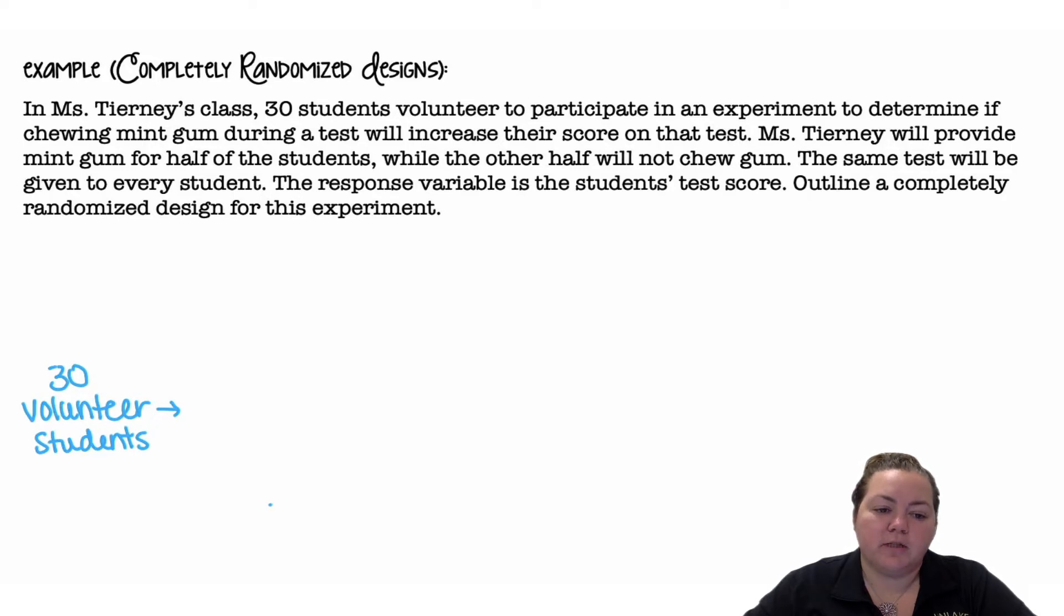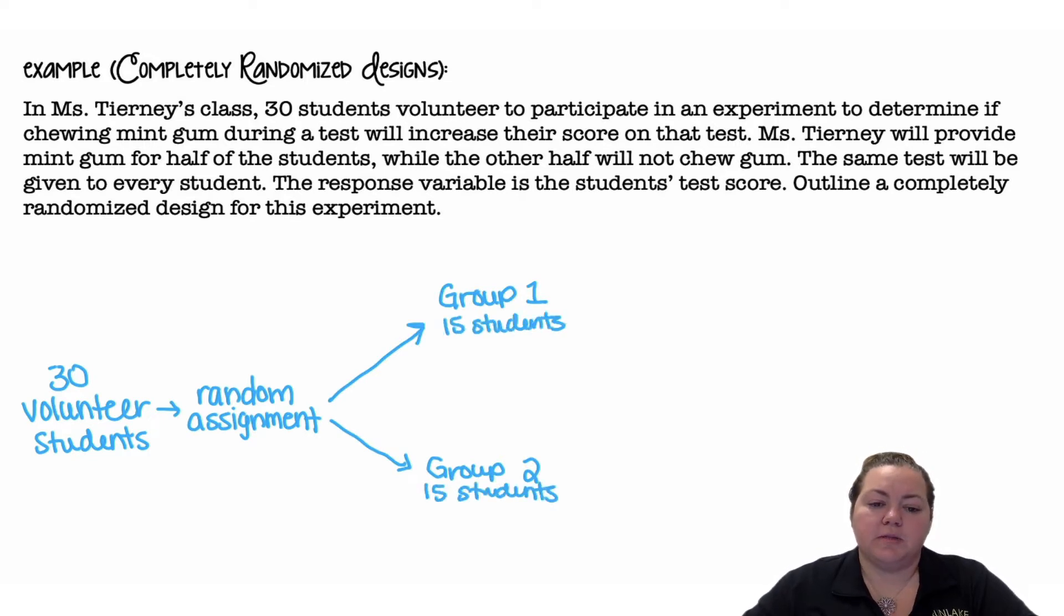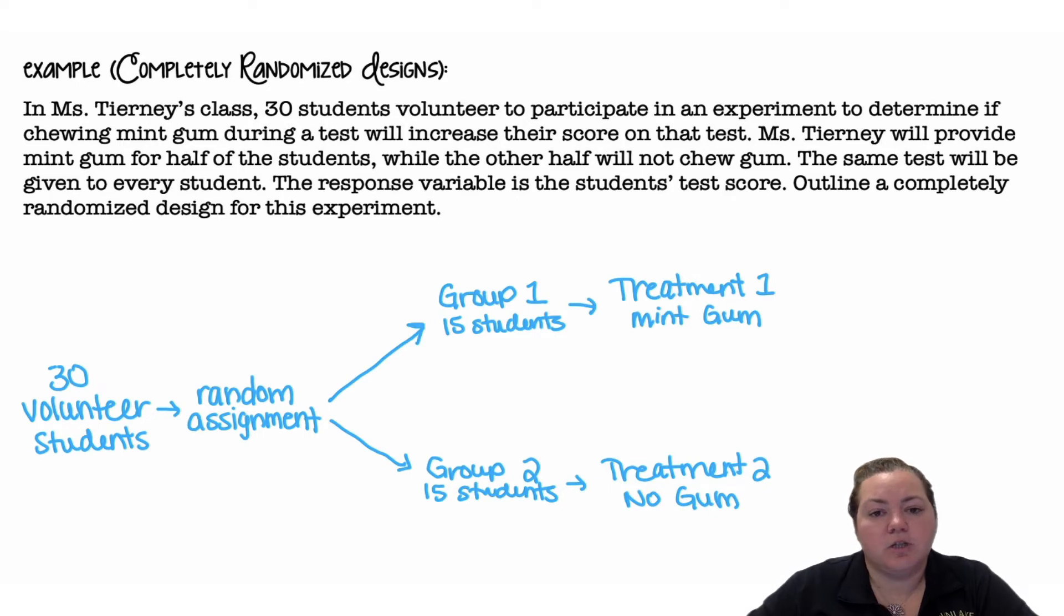So we're starting with 30 volunteer students. We're going to use random assignment to break them into two groups. Group 1 and group 2, each group is going to have 15 students. Group 1 is going to get treatment 1, which is the mint gum. Group 2 is going to get treatment 2, which is no gum. And then I am going to compare the mean test scores.